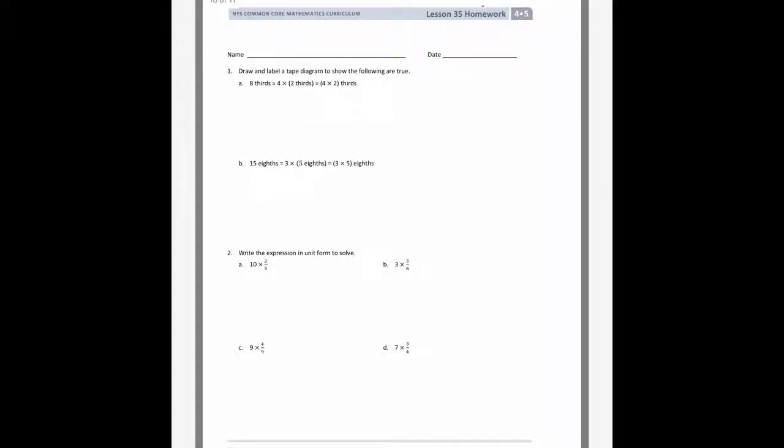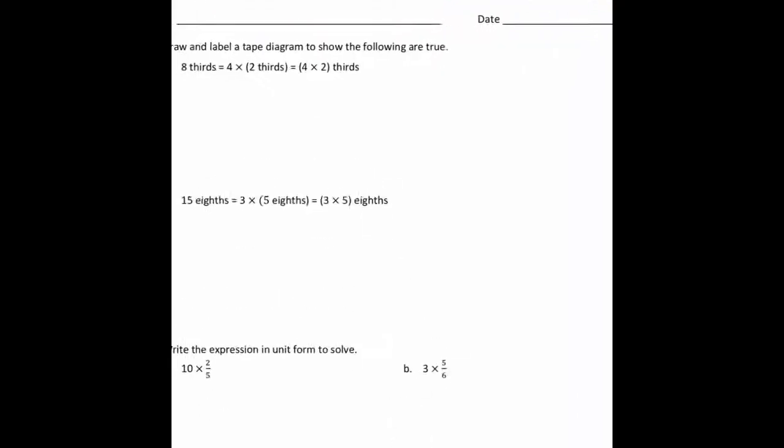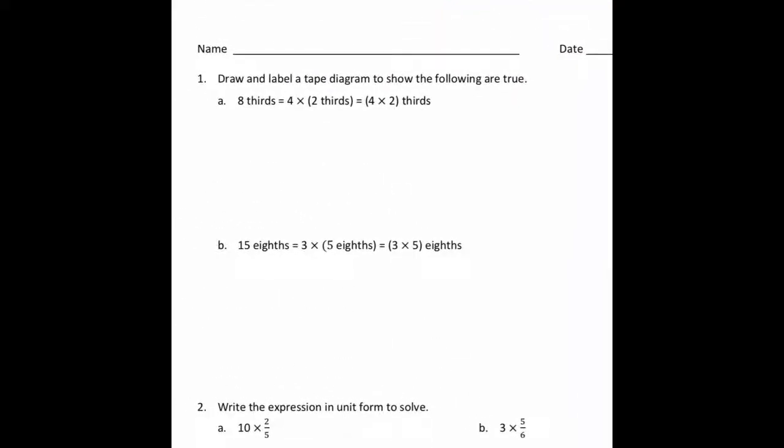Hey guys, I'm going to help you out with Lesson 35's homework tonight. Let's go ahead and take a look at number 1. It says, draw and label a tape diagram to show the following are true. So we have 8 thirds equals 4 times 2 thirds. The way that we're going to show this is I'm just going to draw 4 groups of 2 thirds, because that's essentially what we're saying.